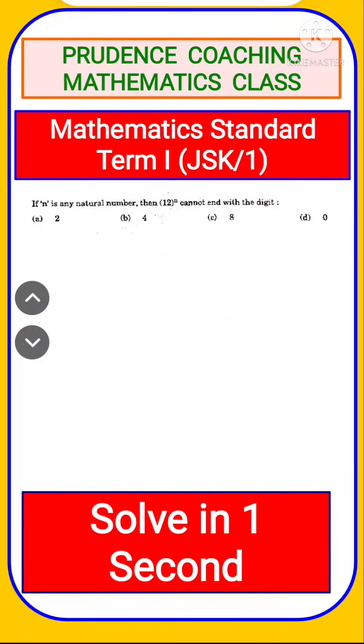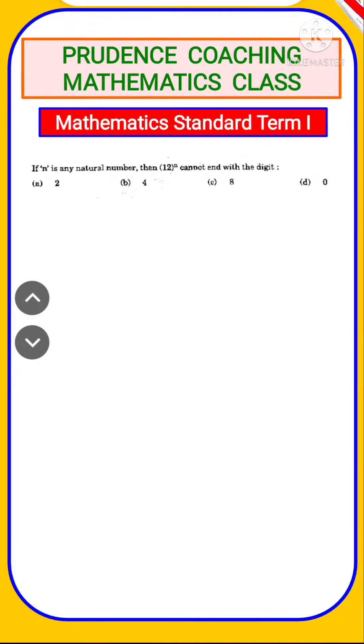Let's start with sum number 25. Here it is asked if n is any natural number then 12 to the power n cannot end with the digit. We are asked to find out the digit which cannot be in the unit place of 12 to the power n while n is the natural number.